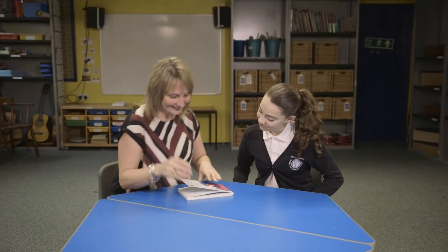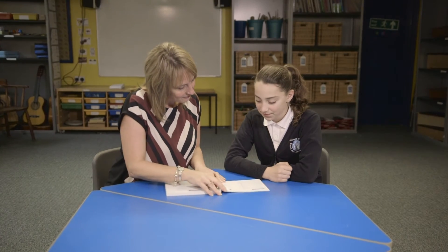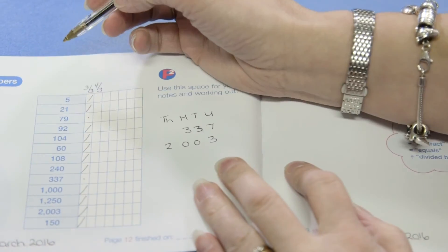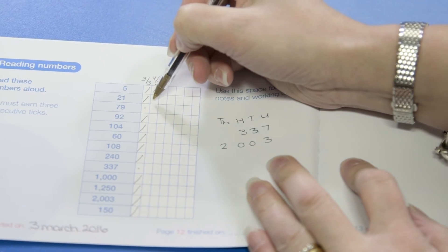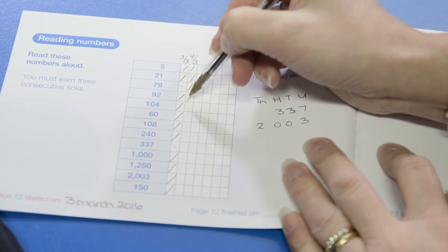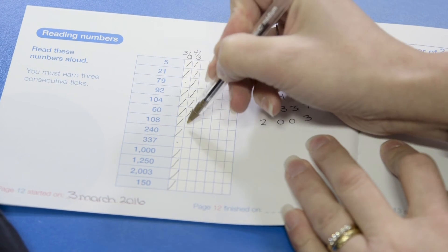The next time you use the book, start at the first question that hasn't got three consecutive ticks. Put the date at the top of the next column, and again continue working through the pages until your time is up. As before, just doing one column per page. Repeat this each time you visit the book.